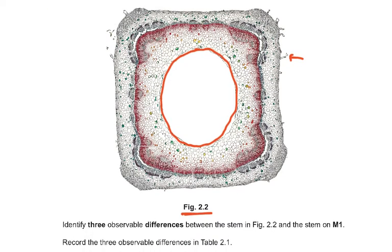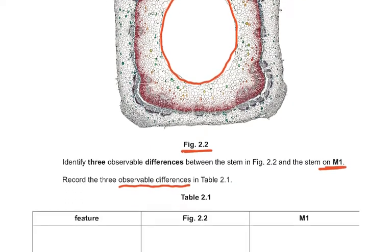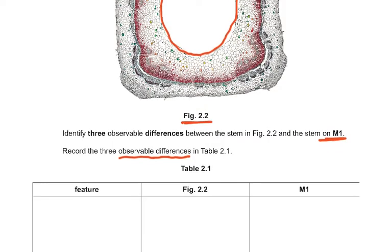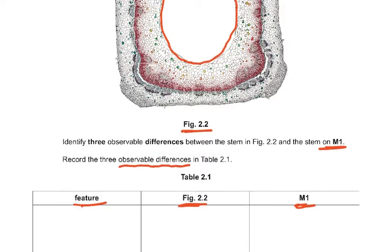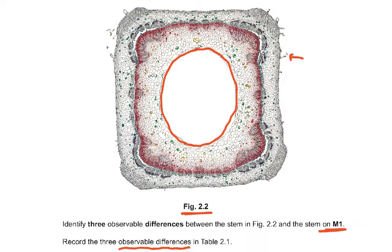It says: identify three observable differences between the stem in figure 2.2 and the stem on M1. Record the three observable differences. Observable difference means something you can observe — you can't say 'it is cylindrical' because you can't observe cylindrical. If they give you a table, that's fine; but if they don't, you need to draw a table every time with three columns: Feature, Figure 2.2, and Slide M1. The figure numbers might be different in the actual exam — Cambridge might give you different designations.